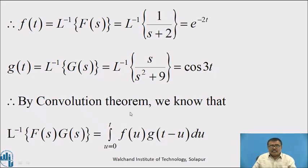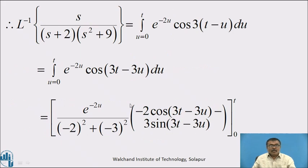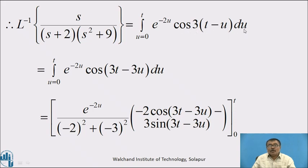By the Convolution Theorem, L⁻¹{F(s)·G(s)} = ∫₀ᵗ f(u)·g(t−u) du. Therefore, L⁻¹{s/((s+2)(s²+9))} = ∫₀ᵗ e^(−2u) · cos(3(t−u)) du = ∫₀ᵗ e^(−2u) · cos(3t − 3u) du.